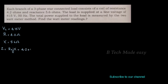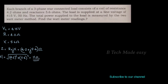The impedance Z equals the square root of R squared plus X squared — that is, the square root of 4.2 squared plus 5.6 squared — which gives Z equal to 7 ohm.